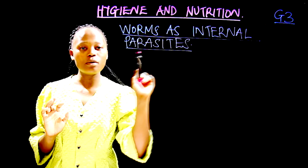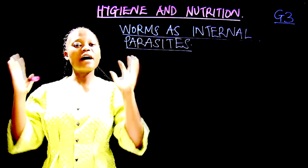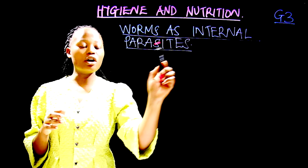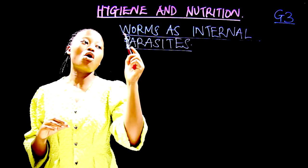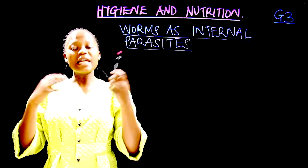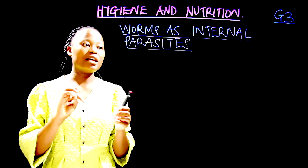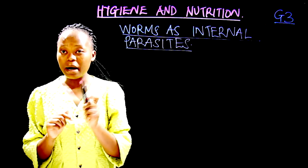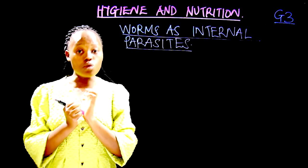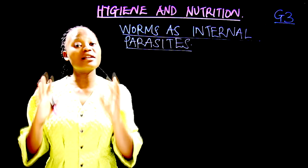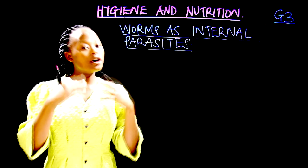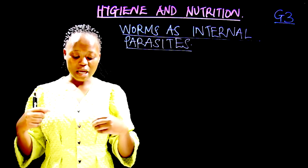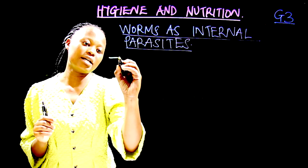Internal parasites are parasites found in our body. Worms are examples of internal parasites. They are found inside our body, especially in our stomach. Remember, parasites are not good — they are harmful and dangerous because they depend on something or compete for something. They are bad friends.